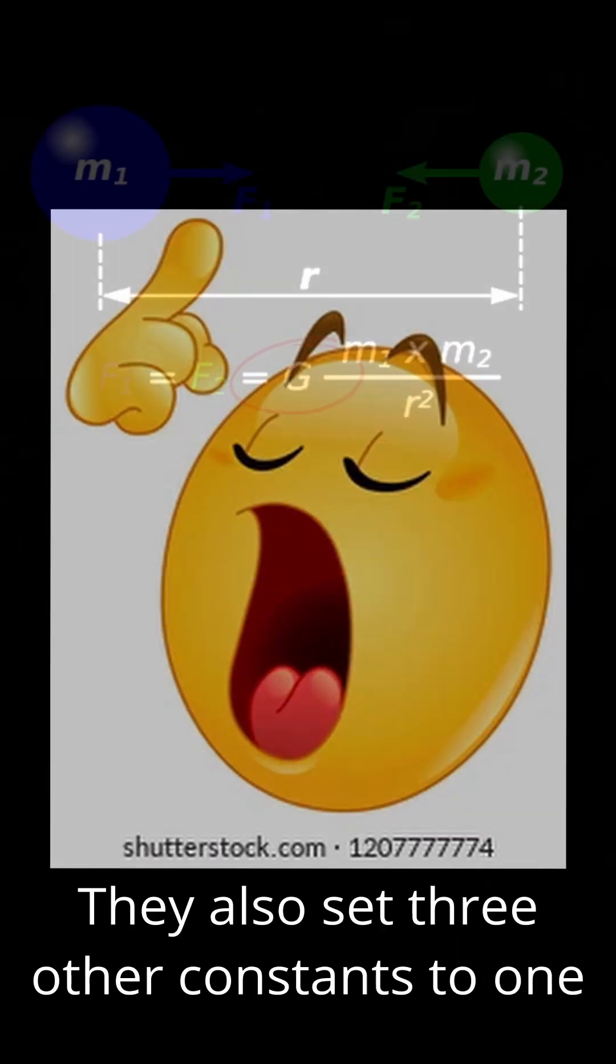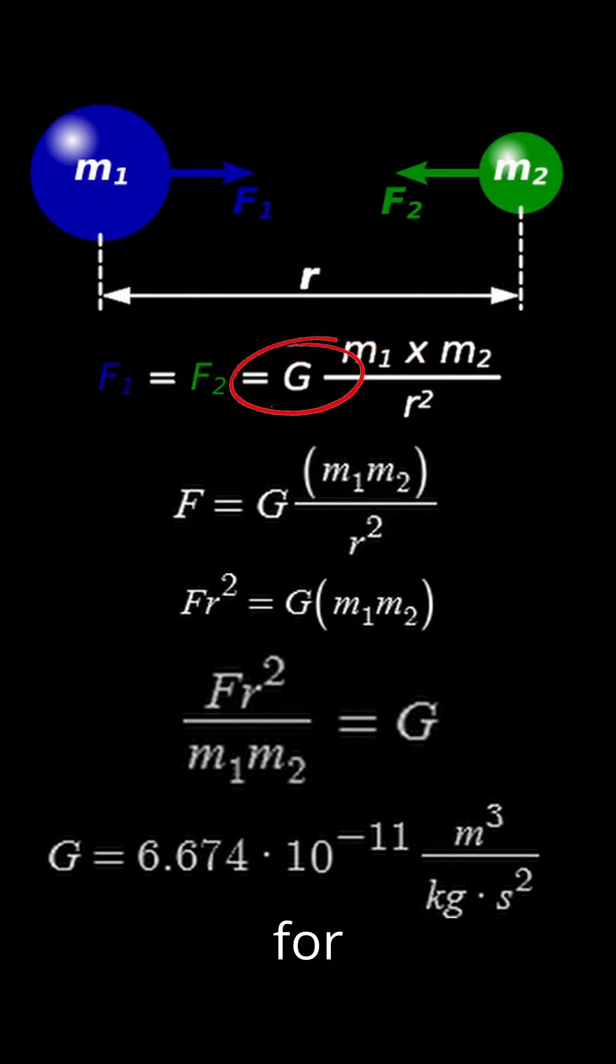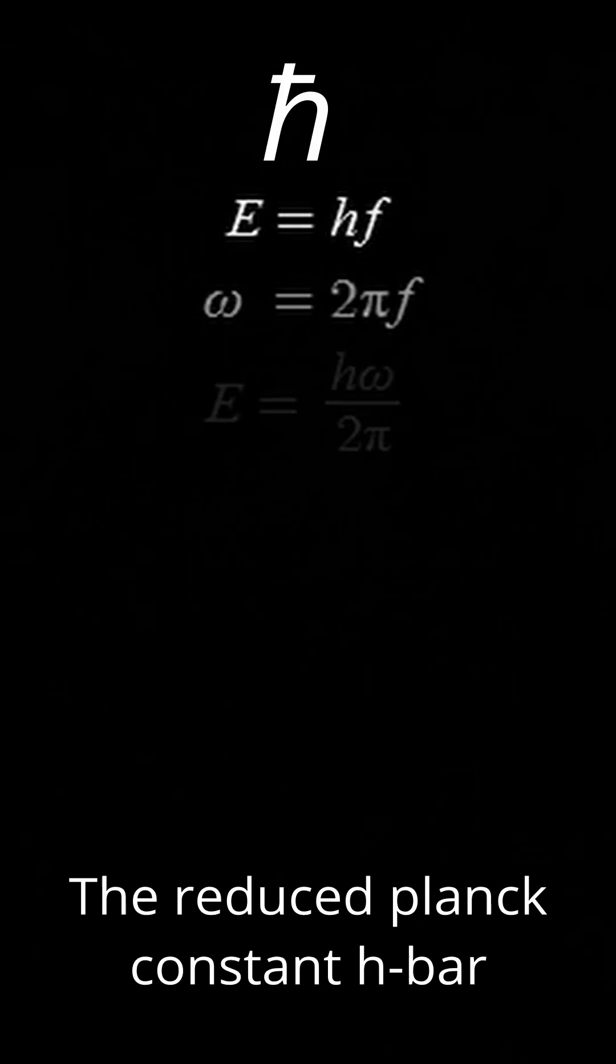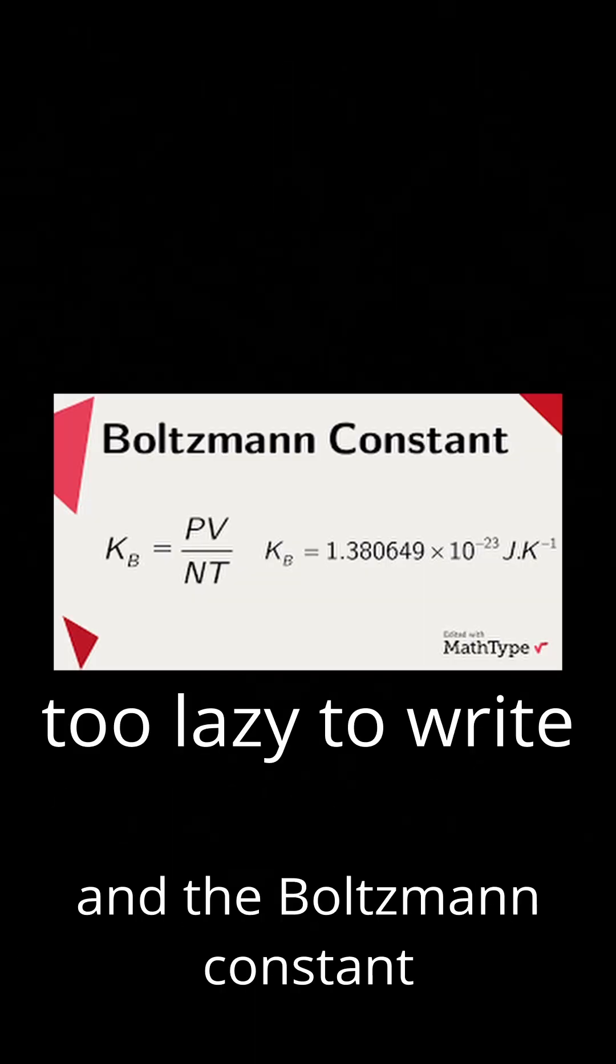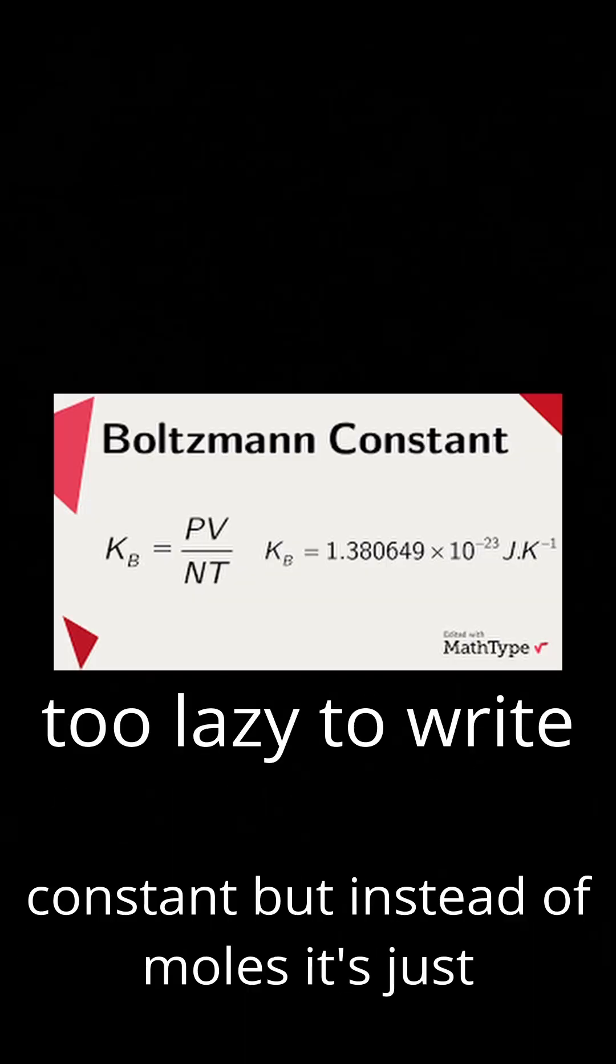They also set three other constants to 1: the gravitational constant G, famous for its role in gravity; the reduced Planck constant h-bar, in light of its brother the regular Planck constant; and the Boltzmann constant, like the gas constant but instead of moles, it's just a number of molecules.